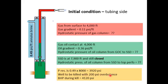Therefore the reservoir pressure is 3,920 psi. The well will be killed with 200 psi overbalance, so the bottom hole pressure target is 4,120 psi. In the annulus we have 0.45 psi/ft brine, which is not enough to kill the well. We will displace this brine with heavier kill brine, and at the end the well will have zero pressure in both the annulus and the tubing.